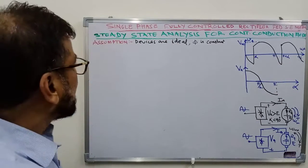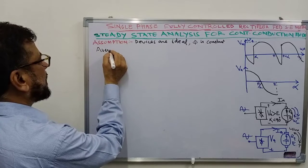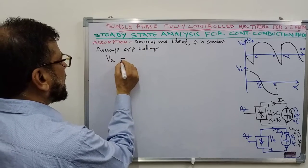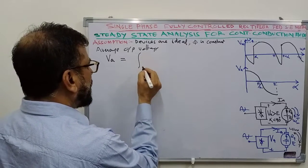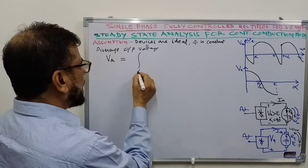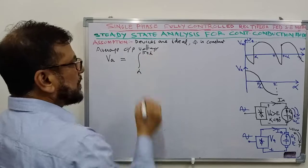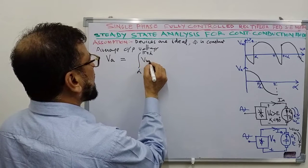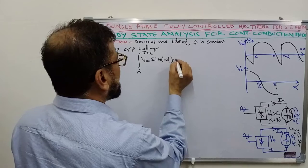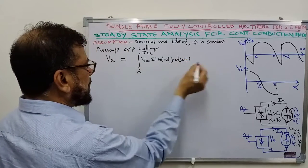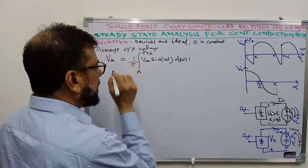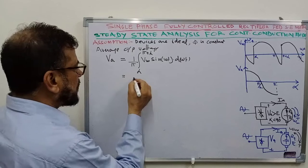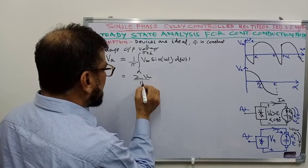To find the average output voltage, we integrate over the whole cycle of variation from alpha to pi plus alpha. During this interval the output voltage remains equal to Vm·sin(ωt). We divide by the period of the cycle, which is pi radians. Integrating and applying the limits, we get the average output voltage equal to 2Vm/π · cos(α).